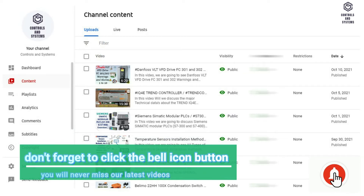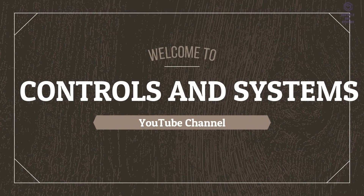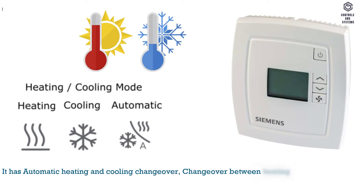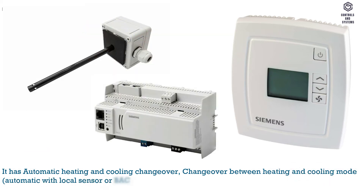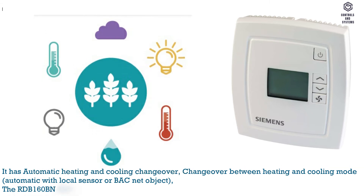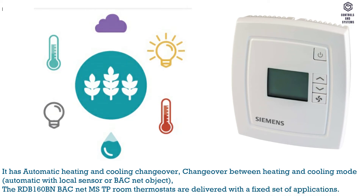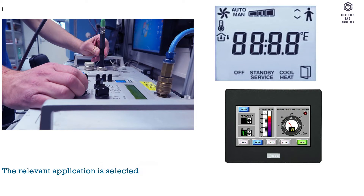Welcome to the Controls and Systems YouTube channel. Overview: it has automatic heating and cooling changeover — changeover between heating and cooling mode is automatic with local sensor or BACnet object. The RDB 160BN BACnet MS/TP room thermostats are delivered with a fixed set of applications; the relevant application is selected and activated during commissioning.